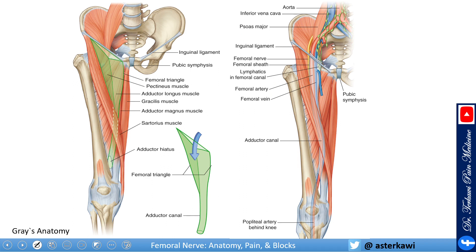Now looking at the relation between the femoral artery, vein, and nerve: the femoral artery, vein, and some lymphatic tissue are within something called the femoral sheath, while the nerve is outside the sheath. All of this runs in what we call the femoral triangle. The femoral artery and vein pass inferiorly through the adductor canal and become the popliteal vessels behind the knee.